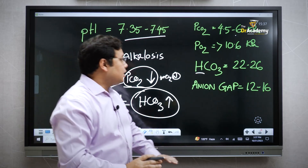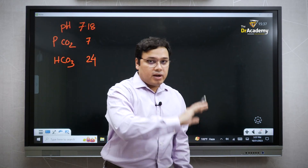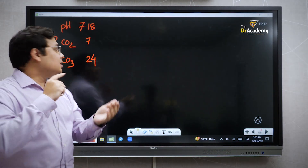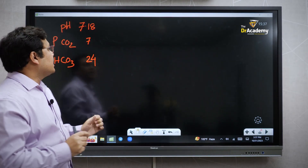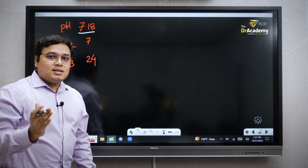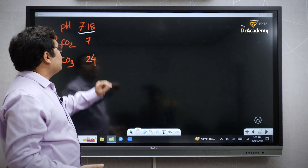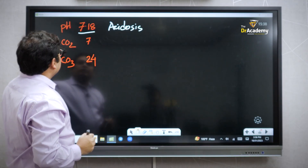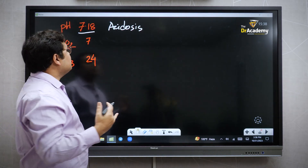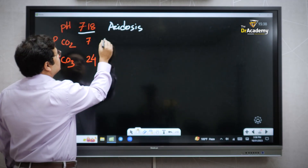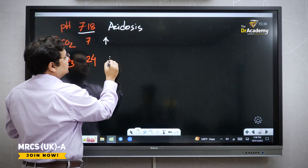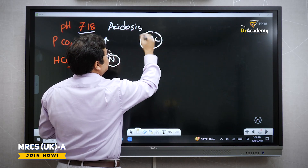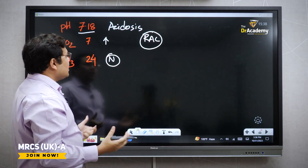Now let's go to a real scenario. They give you a box with pH, bicarbonate, and partial CO2. First look at the pH — is it less than 7.35 or more than 7.45? If less than 7.35, this is acidosis. If the partial CO2 is raised — for example 7 kPa instead of the normal 4.5 to 5 — and the bicarbonate level is normal, this is a respiratory acidosis case.